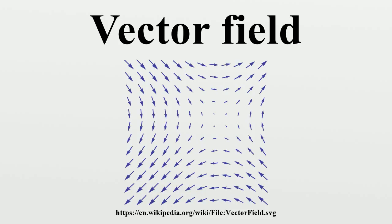Algebraically, vector fields can be characterized as derivations of the algebra of smooth functions on the manifold, which leads to defining a vector field on a commutative algebra as a derivation on the algebra, which is developed in the theory of differential calculus over commutative algebras.